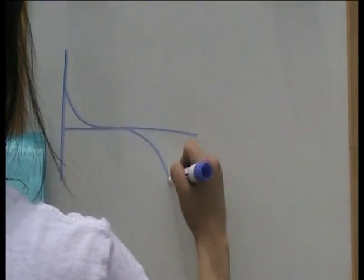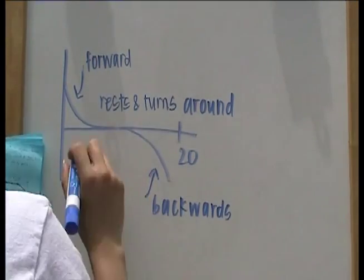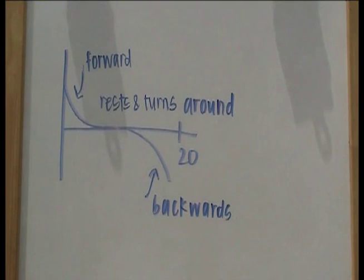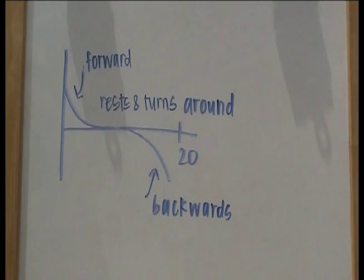Looking at the graph, we can see she changes direction as the line crosses the x-axis, and the area under the curve on the negative side is greater than that of the positive side, giving her a negative displacement.